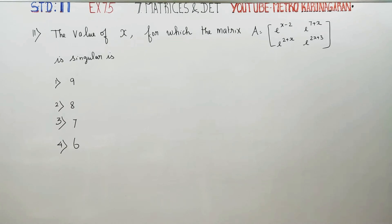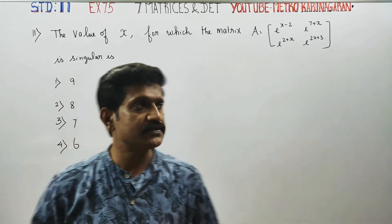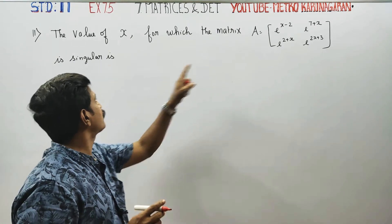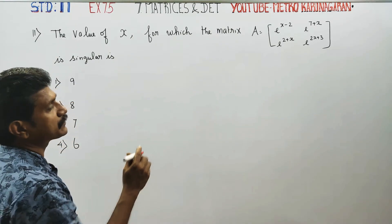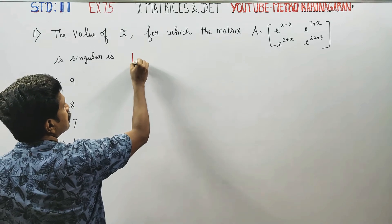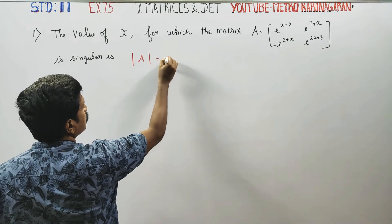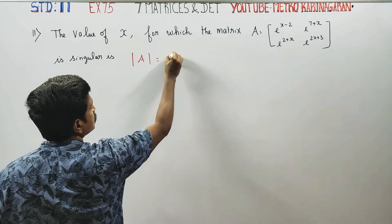Dear Leavn's Tender students, in exercise number 7.5, you have to find the value of x. It is given that this matrix is singular. If a matrix is singular, its determinant value is 0.